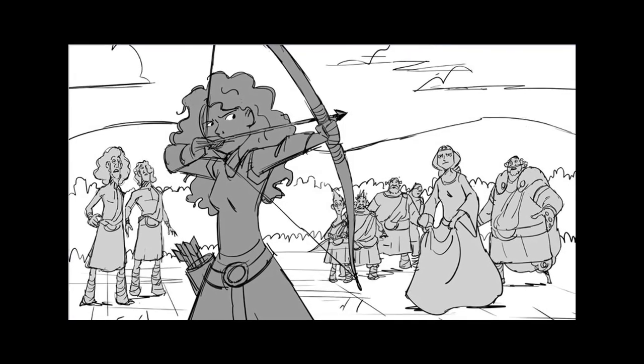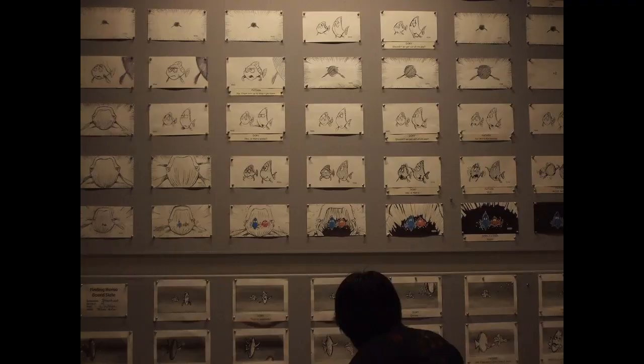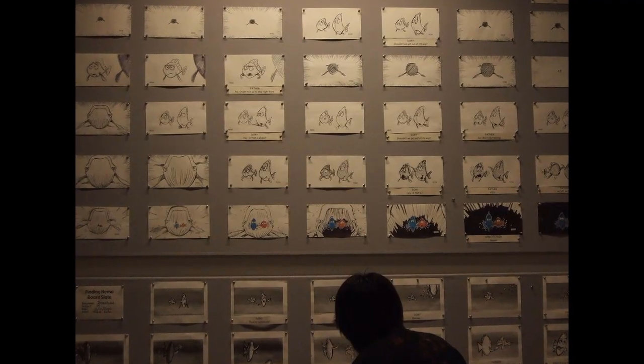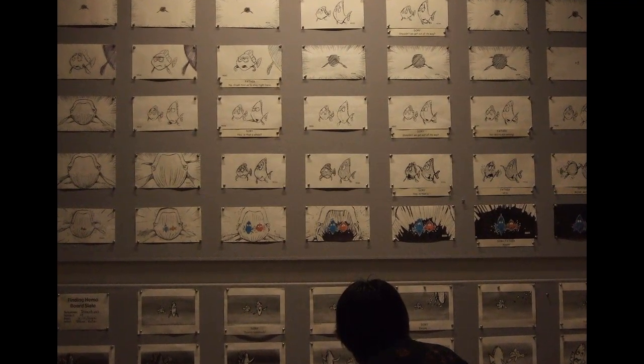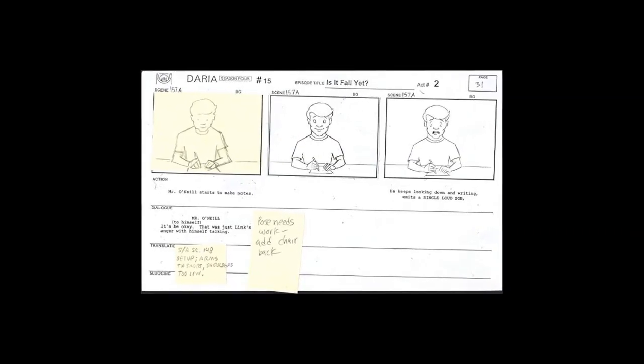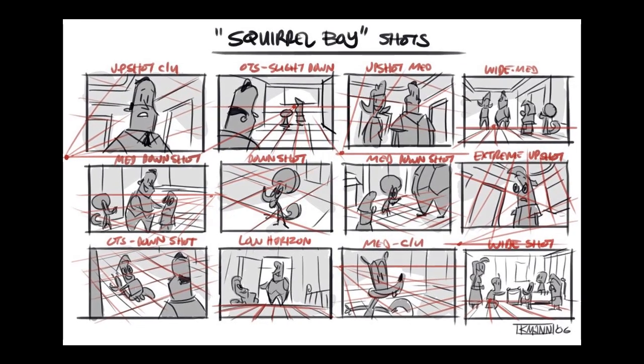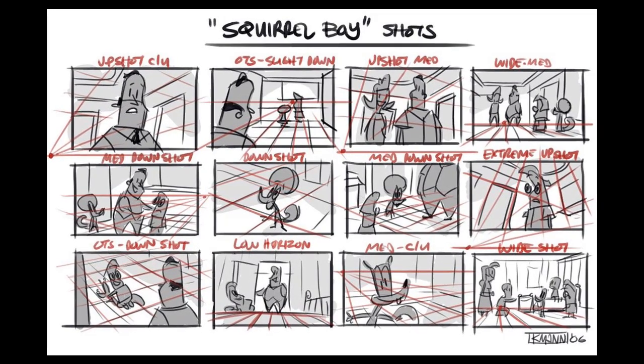Now we're going to talk about the actual steps of pre-production. Number 1, storyboarding. This is the process in which you transform the written story into a design on paper, so you can outline the block-out scenes and the dialogues that are going to take place between characters. The storyboard allows you to see how your story is progressing and how long every action and scene takes to complete. You can also have notes to explain things that are not very clear, and show character and camera movements using signs or words.